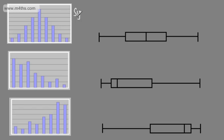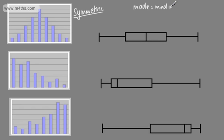This first one is said to be symmetric. If we look at the graph, we can see that the distribution is symmetric. In terms of the measures of location, the mode will be equal to the median, which in turn will be equal to the mean. So this is one way of establishing skewness.